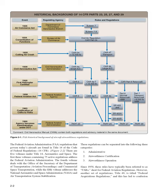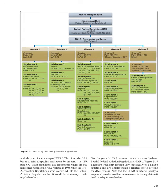However, another set of regulations, Title 48, is titled Federal Acquisitions Regulations, and this has led to confusion with the use of the acronym FAR. Therefore, the FAA began to refer to specific regulations by the term 14 CFR Part 20. Most regulations in the sections within are odd-numbered, because the FAA realized in 1958 when the Civil Aeronautics Regulations were recodified that it would be necessary to add regulations later. The FAA has sometimes seen the need to issue special Federal Aviation Regulations, SFAR. These are frequently focused on a unique situation and are usually given a limited length of time for effectiveness. Note that the SFAR number is purely a sequential number and has no relevance to the regulation it is addressing or attached to.